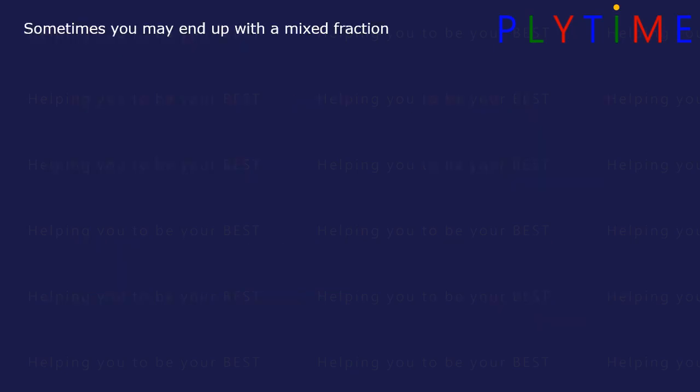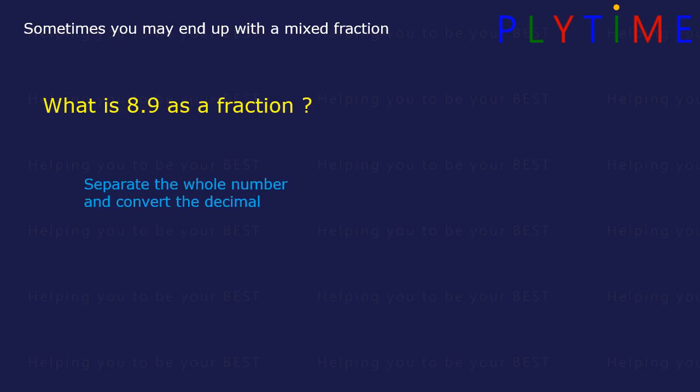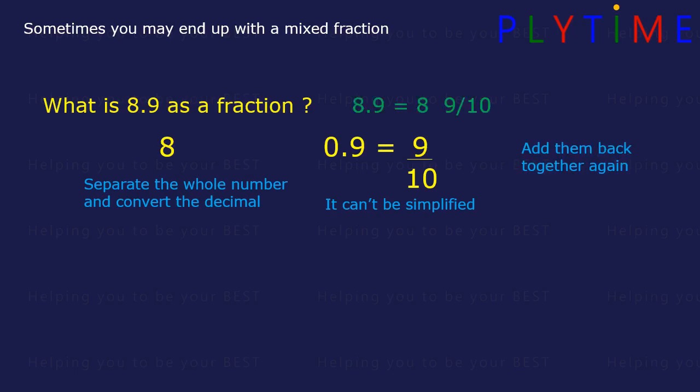Sometimes you may end up with a mixed fraction. What's 8.9 as a fraction? Separate the whole number and convert the decimal. So we have 8 and 0.9. 0.9 converted is the same as 9 over 10. We can't simplify this anymore, so add the two numbers back together. 8.9 as a fraction is 8 and 9 tenths.